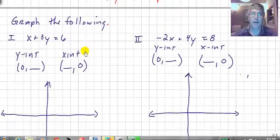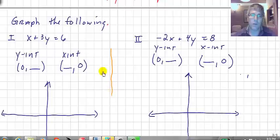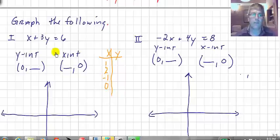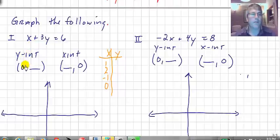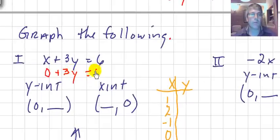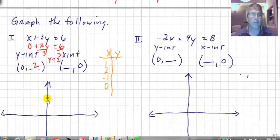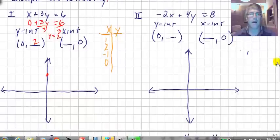Let's look at some examples. We want to graph x plus 3y equals 6. We could do a table of values, but we're going to do this the easy way — find the y-intercept and x-intercept and graph. For the y-intercept, we set x equal to 0: that becomes 0 plus 3y equals 6, divide by 3, and we get y equals 2. So our y-intercept is the ordered pair (0, 2). We can go ahead and plot that on our graph.